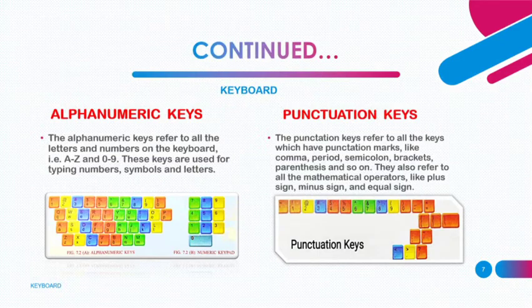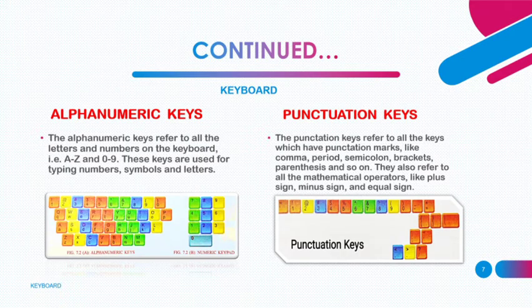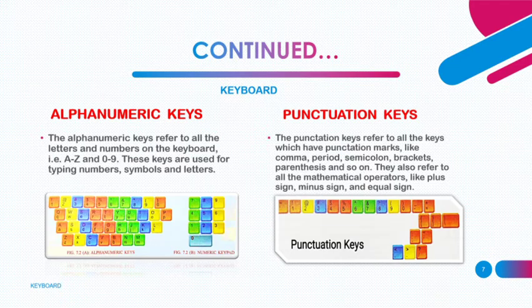The first type is alphanumeric keys. These keys refer to alphabets and numbers, from A to Z and 0 to 9. They are used for typing numbers, letters, and symbols. The next type is punctuation keys, which refers to all the keys that have punctuation marks. They also refer to all the mathematical operators like plus, minus, and equal sign.